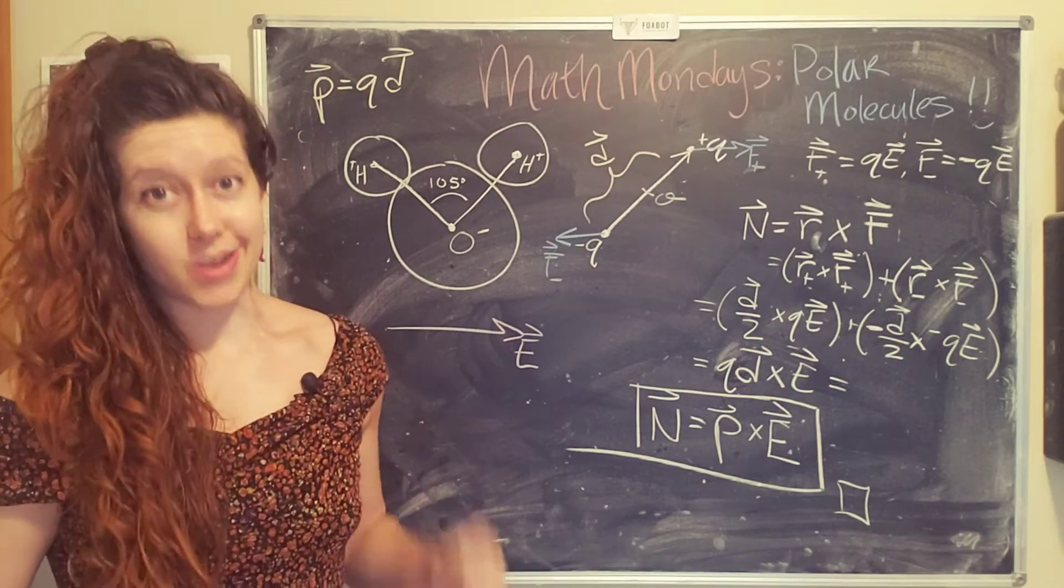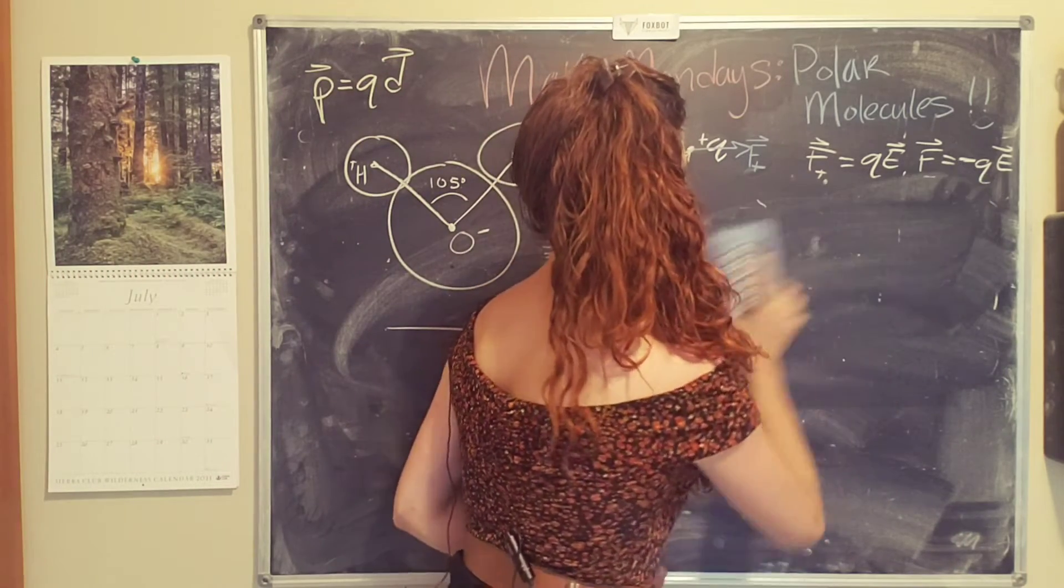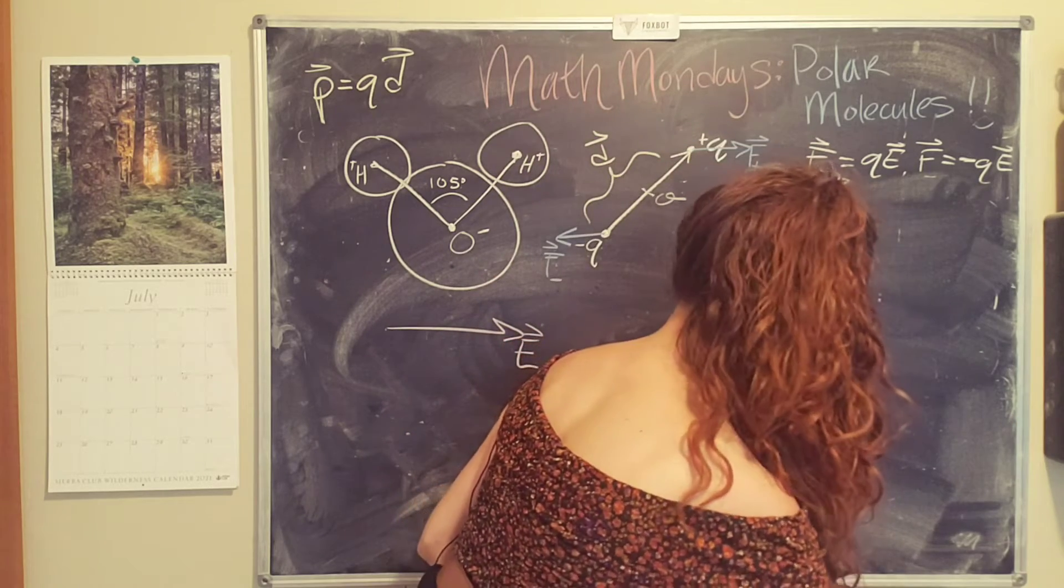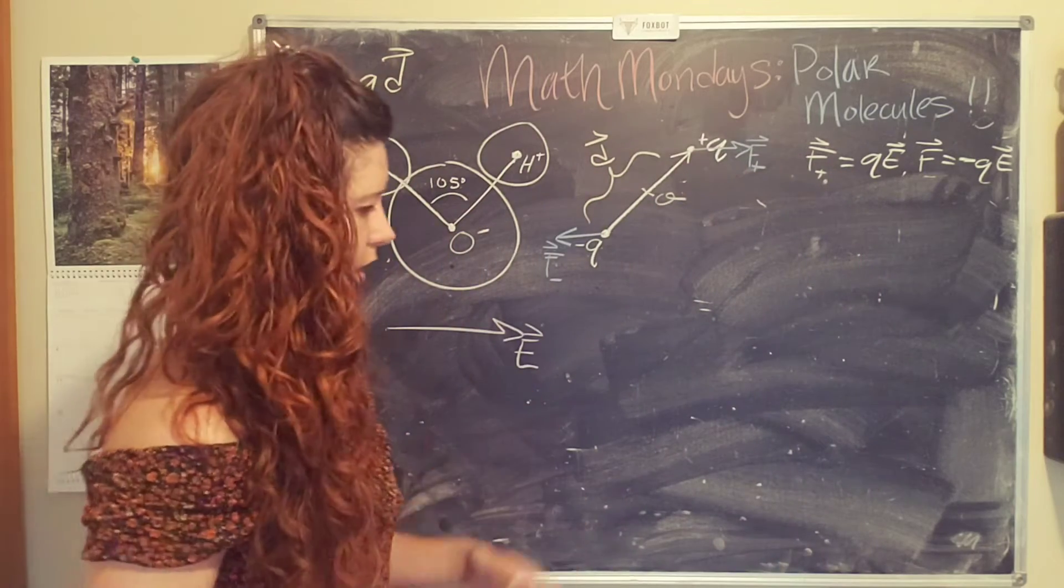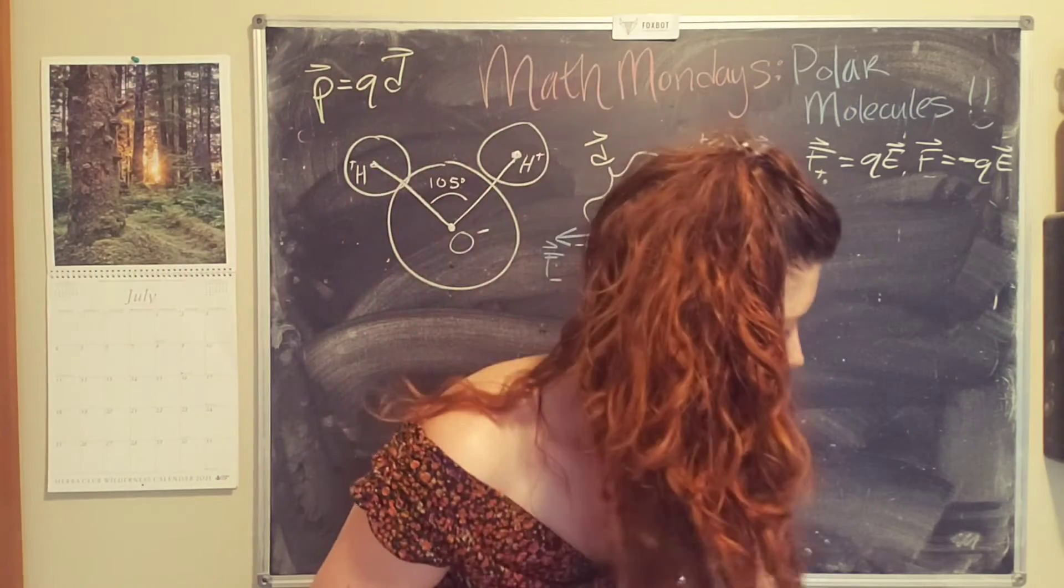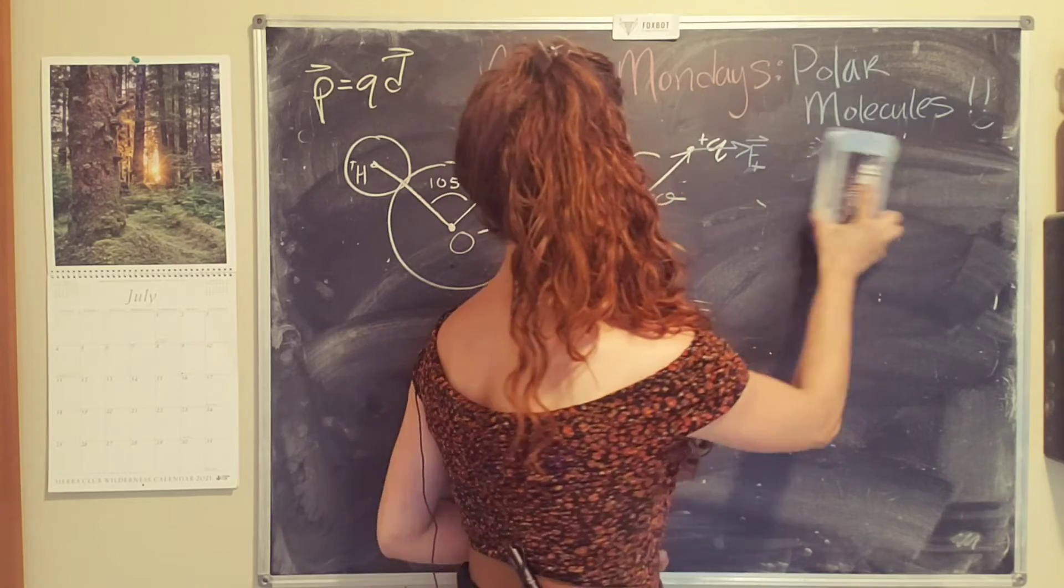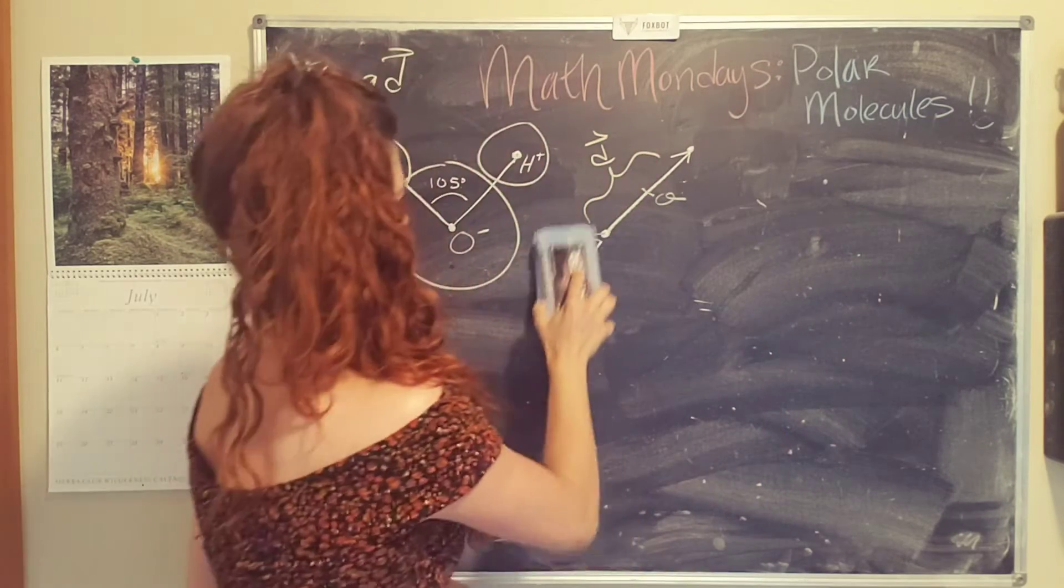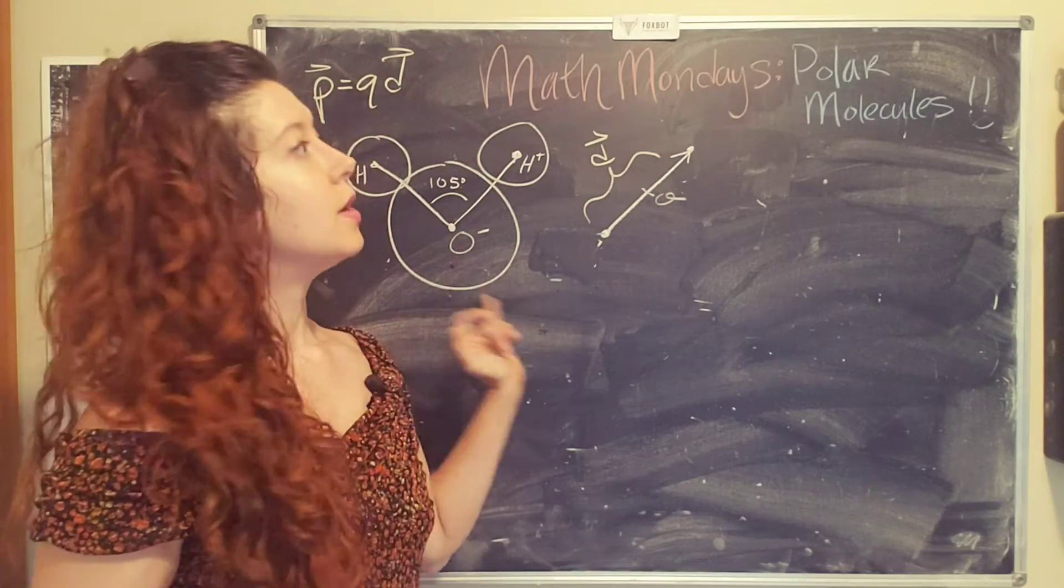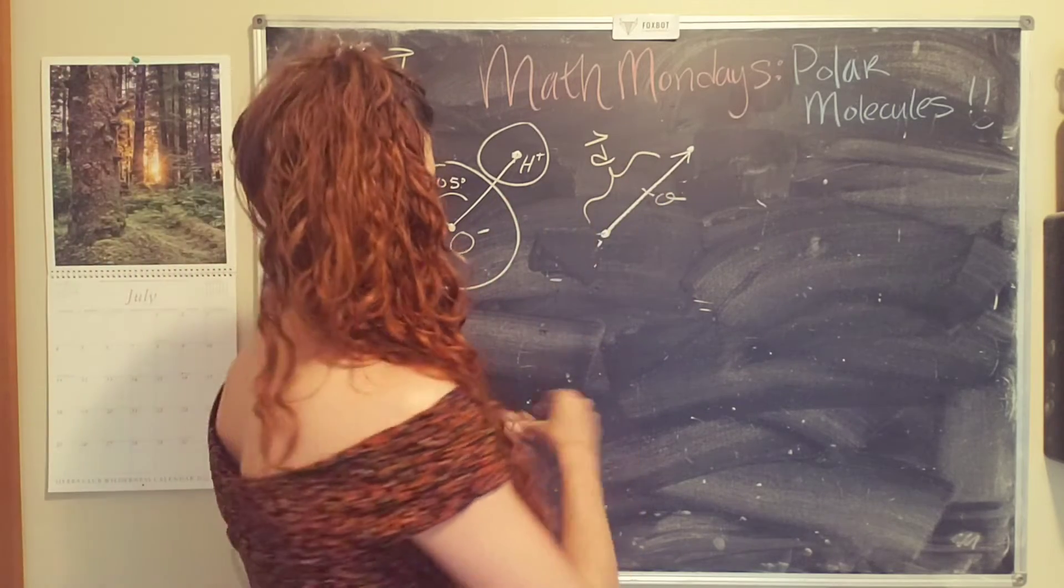So that is a uniform electric field. Let's tackle a non-uniform electric field. So let's leave that there because that's going to be the same. And let's say that our electric field is changing. And so in this case, there's going to be a net force, a net electric force on the molecule.